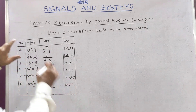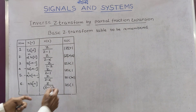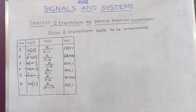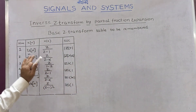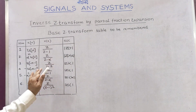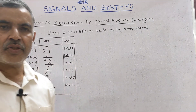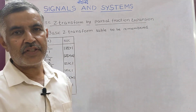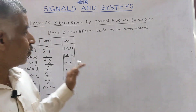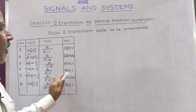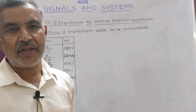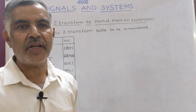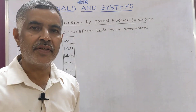This is what is called the basic Z transform pair table. The problems are entirely dependent on this table. In the examination, students are requested to construct this table and then proceed with the problem. In the next class I will take up problems. Thank you.